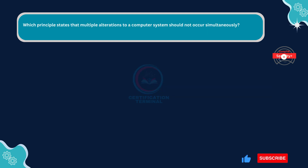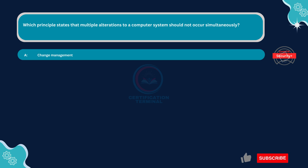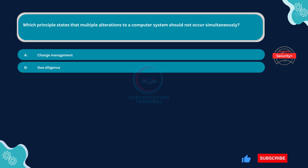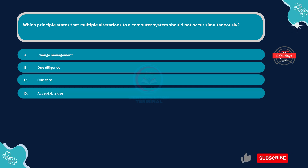Which principle states that multiple alterations to a computer system should not occur simultaneously? Option A: Change management. Option B: Due diligence. Option C: Due care. Option D: Acceptable use.